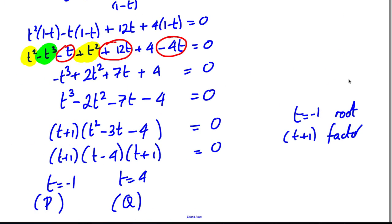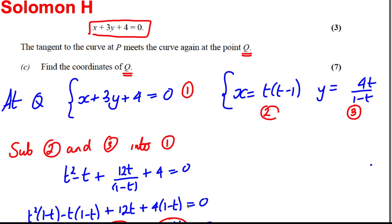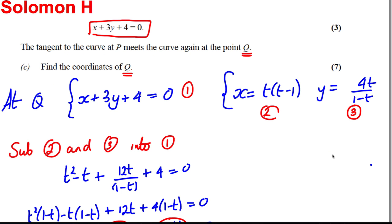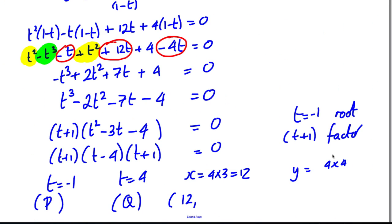At t equals 4, the x coordinate is 4 times 3, which is 12. The y coordinate is 4 times 4 over 1 subtract 4, which is 16 over negative 3, giving negative 16 over 3. So the coordinates of Q are (12, negative 16 over 3), and we're done!